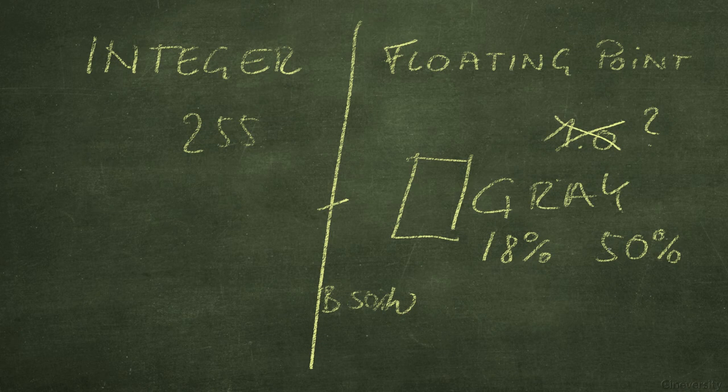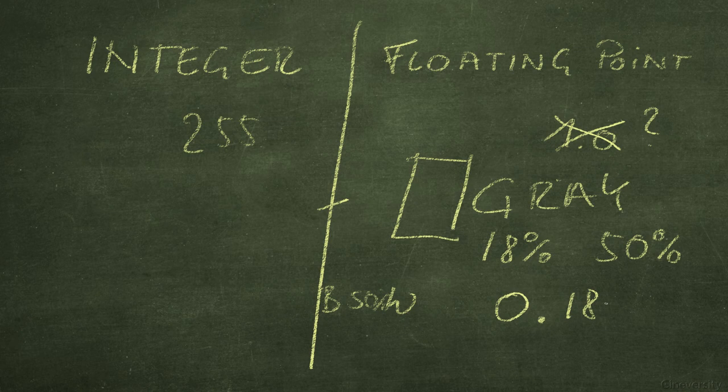What I wanted to tell here was that in the white paper of OpenEXR, the 50% gray or the 18% reflectance card, the 18% gray card, is exactly then 0.18. This is pretty important because it gives also a